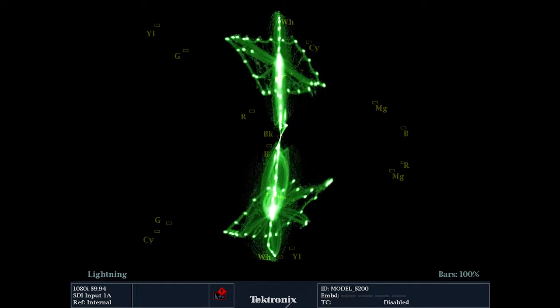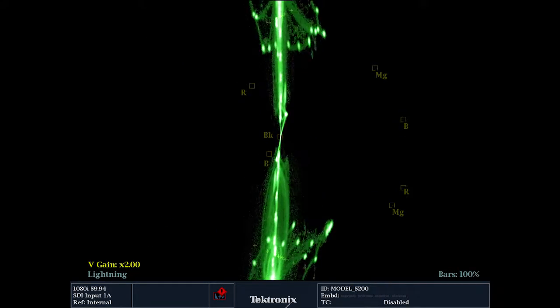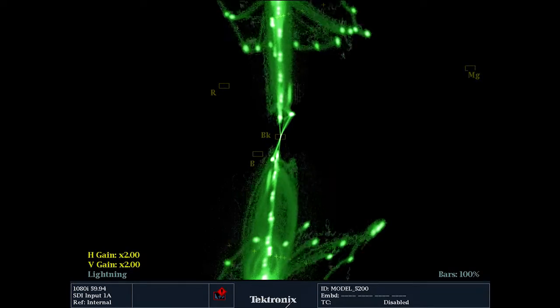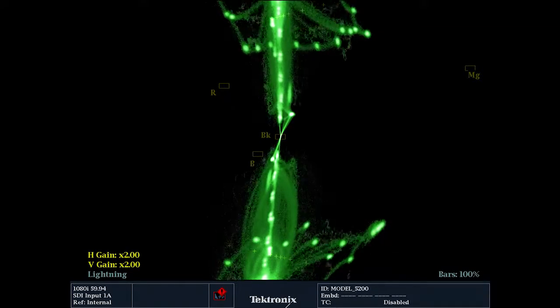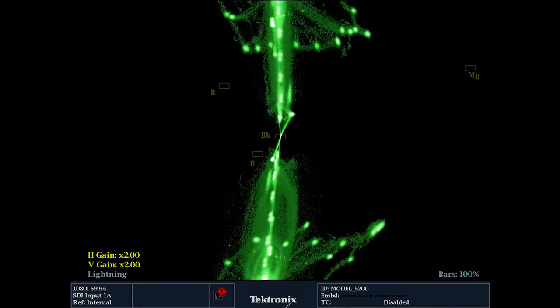For live signals, the user can apply gain and magnification to show the signal around the black region and make adjustments easily to set the black level.